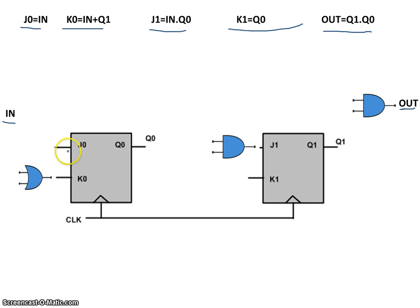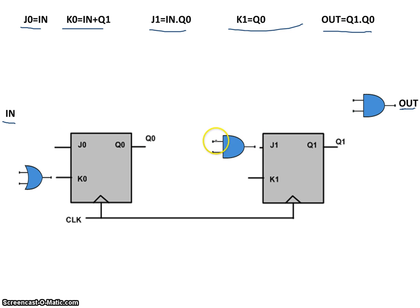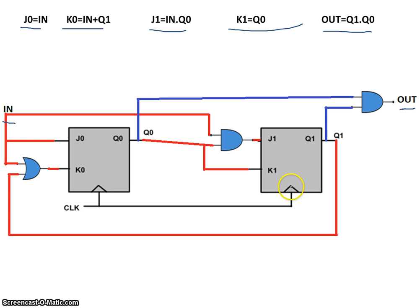We can wire j0 to input, k0 to this OR gate with input or q1, j1 will be input AND q0, and k1 will be q0. Here's the complete circuit diagram wired up.